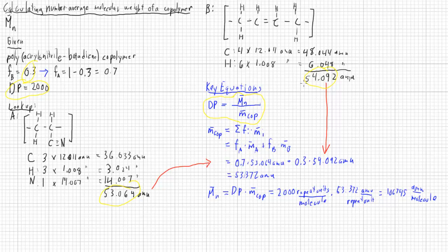But also, we needed to know the fraction of each of those components. We were given what one of the components is, and because there's only two components, we were able to subtract that from one and find the fraction of the other component.